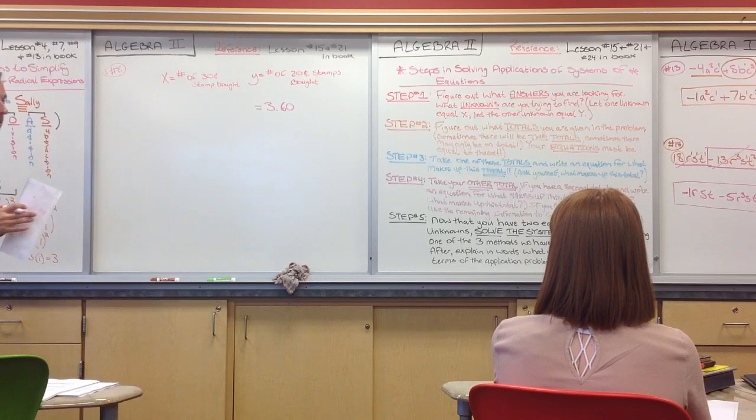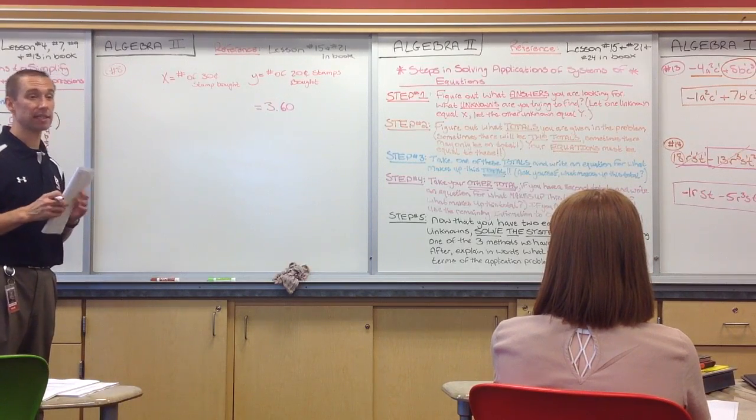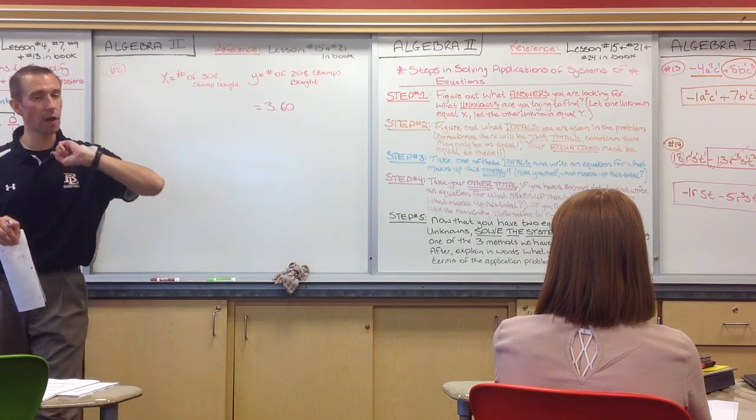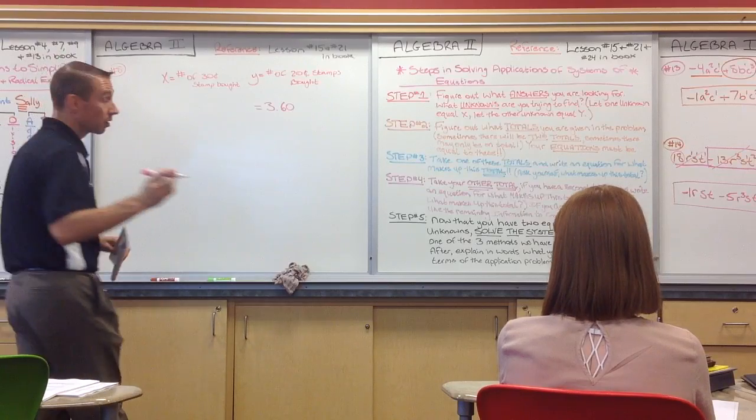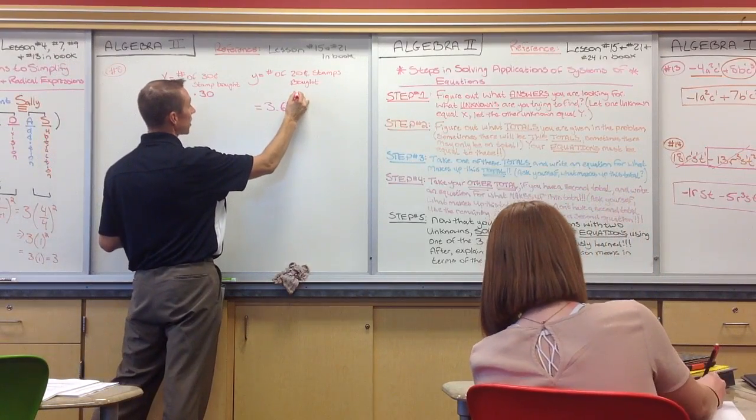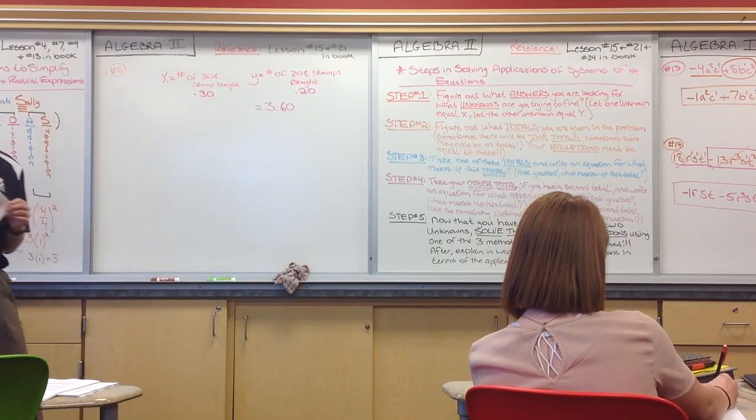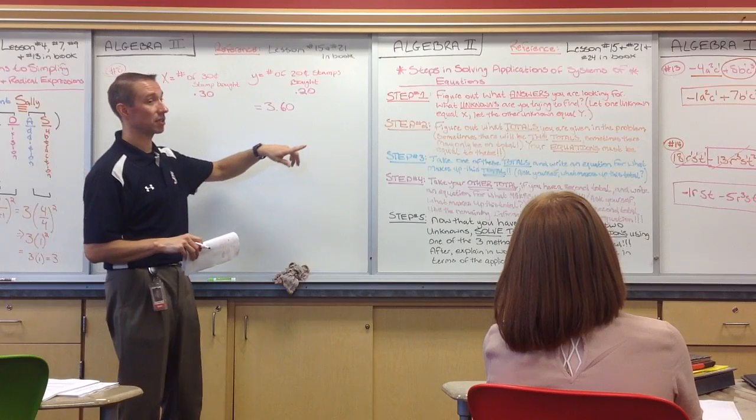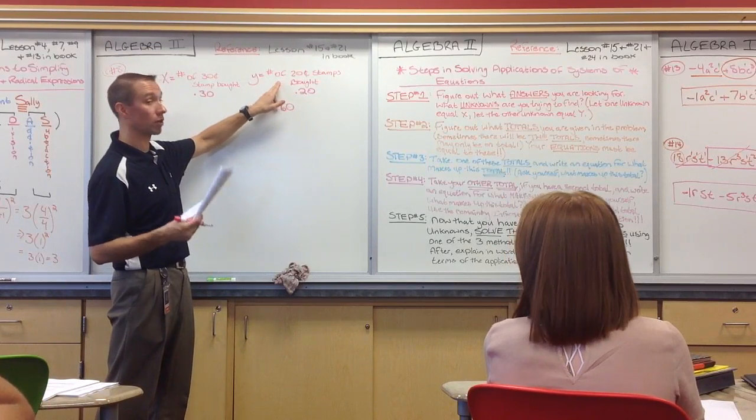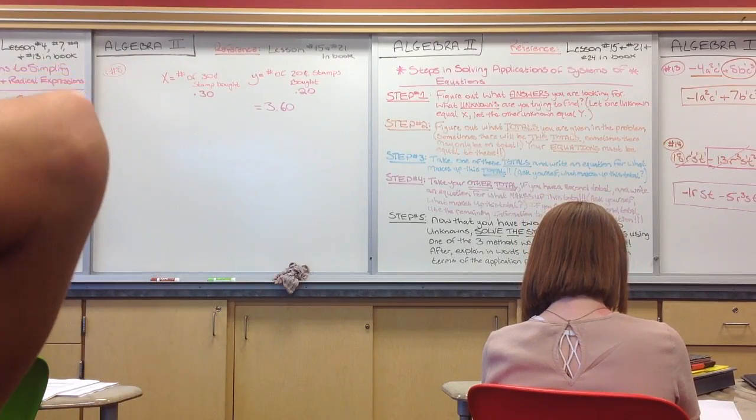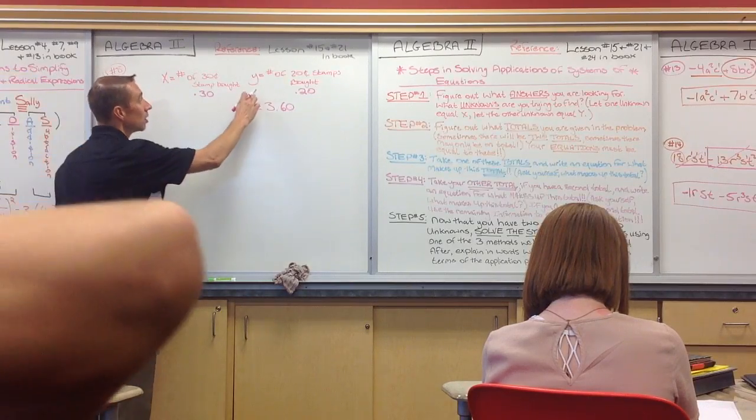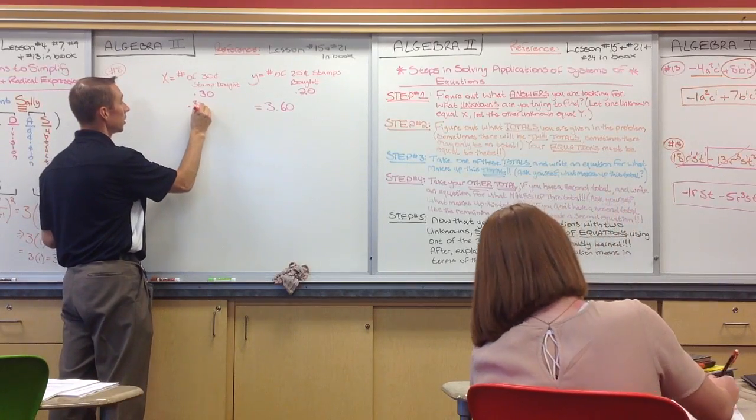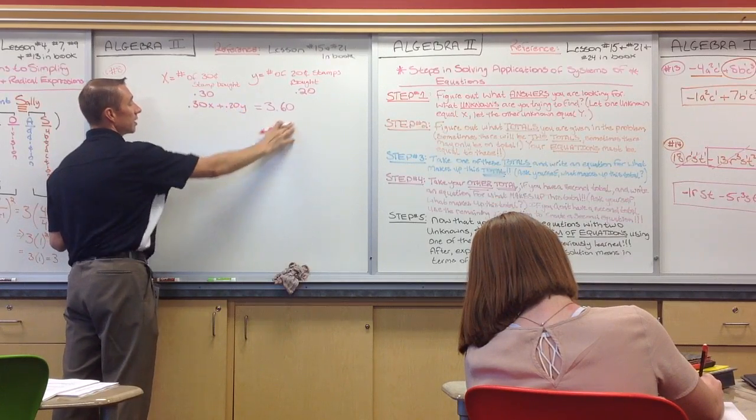Now, how much does each 30-cent stamp cost? And how do we write that in the proper notation? Remember, this is in dollars and cents. So, how would we write 30 cents? 0.30 or 0.3. How would we write 20 cents? 0.20. Those are the values of each of those, or the cost of each of those stamps. Now, if you spent $3.60, each x costs 0.30 cents, or 0.30 dollars, in other words, 30 cents. Because remember, 30 cents is a fraction of a dollar, so that's why we have to keep them as decimals. So, what's my equation going to be here? 0.30x plus 0.20y is equal to $3.60.